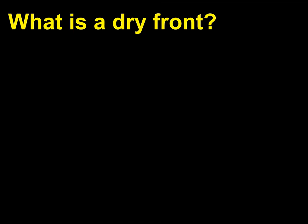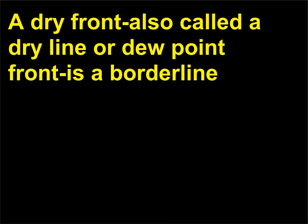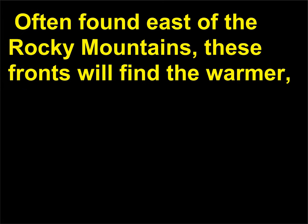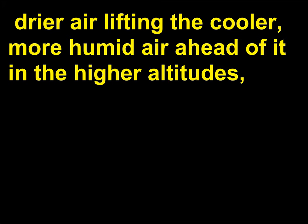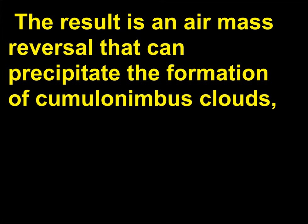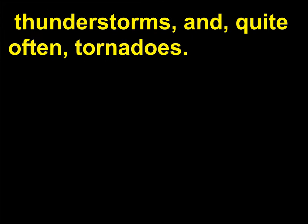What is a dry front? A dry front, also called a dry line or dew point front, is a borderline separating a mass of dry air from one of much more humid air. Often found east of the Rocky Mountains, these fronts find the warmer, drier air lifting the cooler, more humid air ahead of it to higher altitudes, while humid air near the ground is denser than the dry air and the drier air flows over it. The result is an air mass reversal that can precipitate the formation of cumulonimbus clouds, thunderstorms, and quite often, tornadoes.